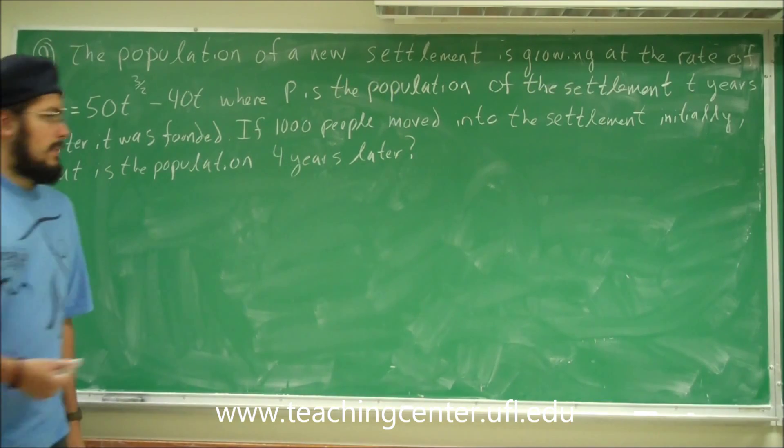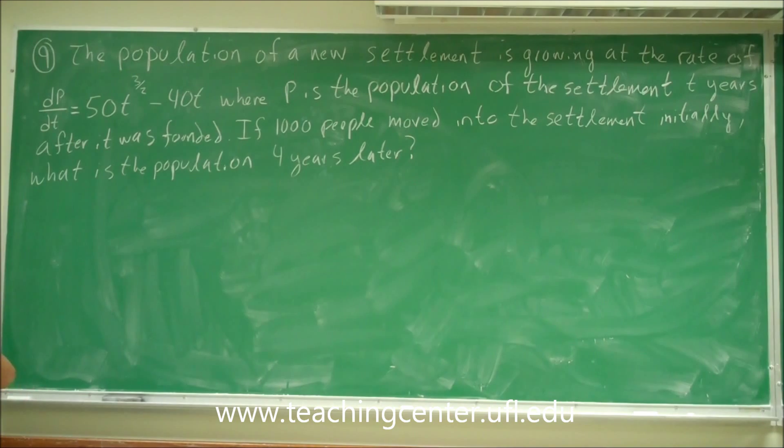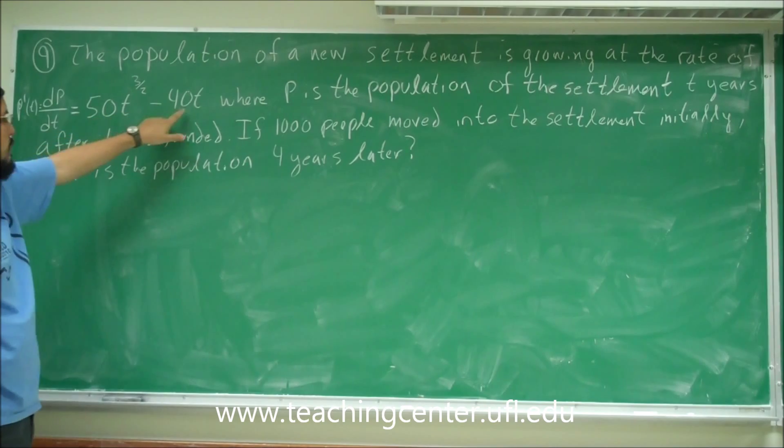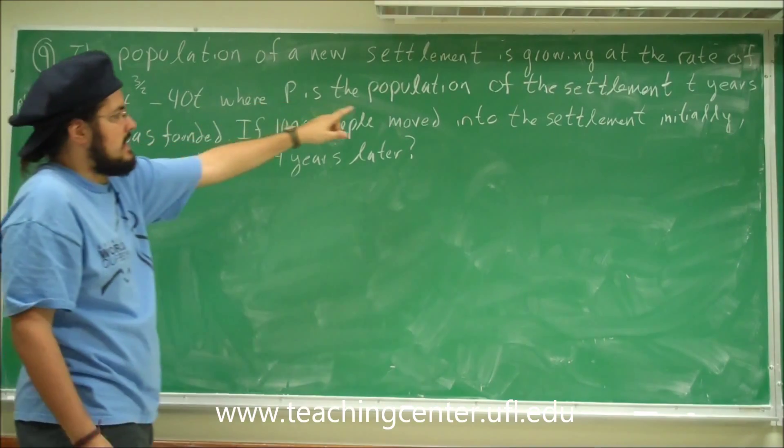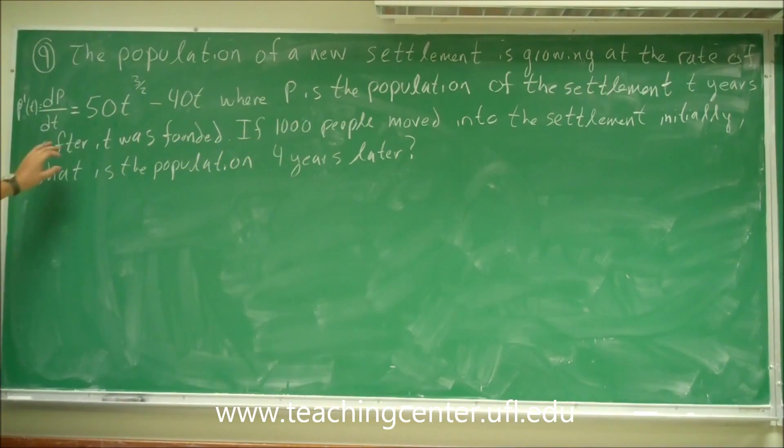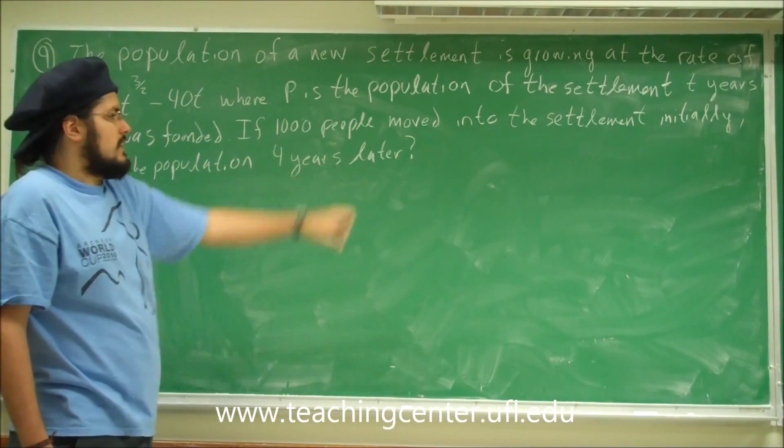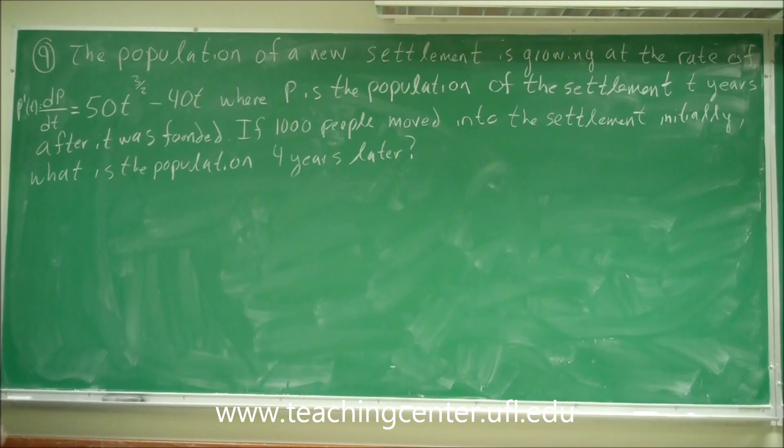Alright, so this is problem 9. Problem 9 reads: the population of a new settlement is growing at the rate of dp/dt, which is pretty much p prime of t, equals 50t to the 3 halves minus 40t, where p is the population of the settlement t years after it was founded. Now, if 1,000 people moved into the settlement initially, what is the population 4 years later?